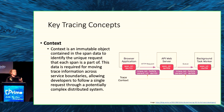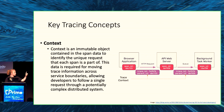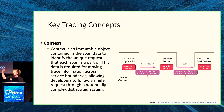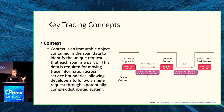Context is an immutable object contained within the span that allows us to identify the unique request each span is part of. It consists of two parts: the trace ID and the parent ID. The trace ID tells us these spans are all part of the same trace. The parent ID tells us where the request originated — which microservice came before — so we can understand where it went wrong and which particular microservice is the bottleneck.